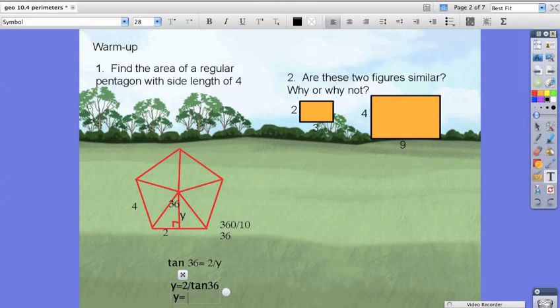It should be y equals 2 divided by tan 36. And once you substitute that in,